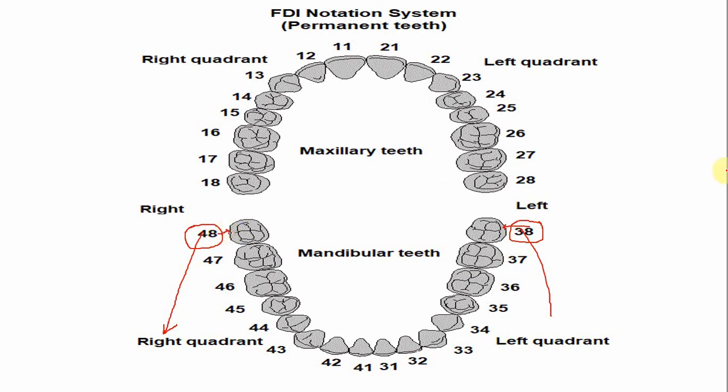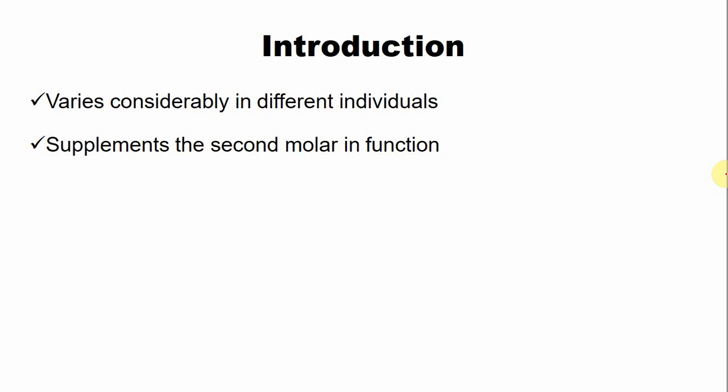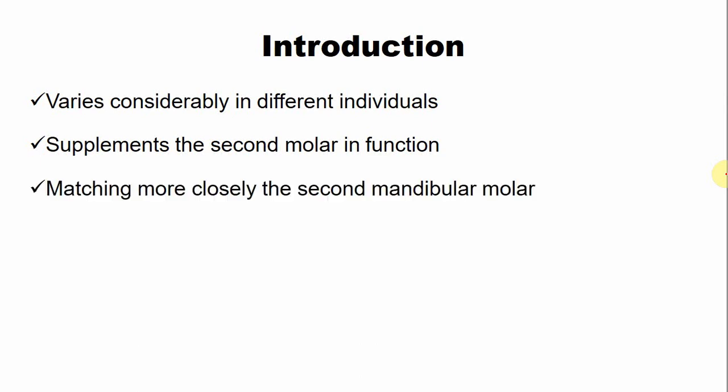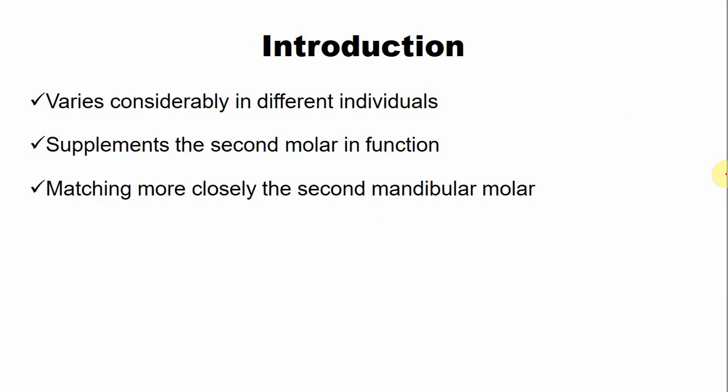Some basic features of the mandibular third molar: the mandibular third molar, along with the maxillary third molar, varies considerably among different individuals, with a lot of variation in number of cusps and occlusal design. This tooth supplements the second molar in function when properly erupted, helping in the grinding function. It also has a close resemblance to the mandibular second molar in most cases.